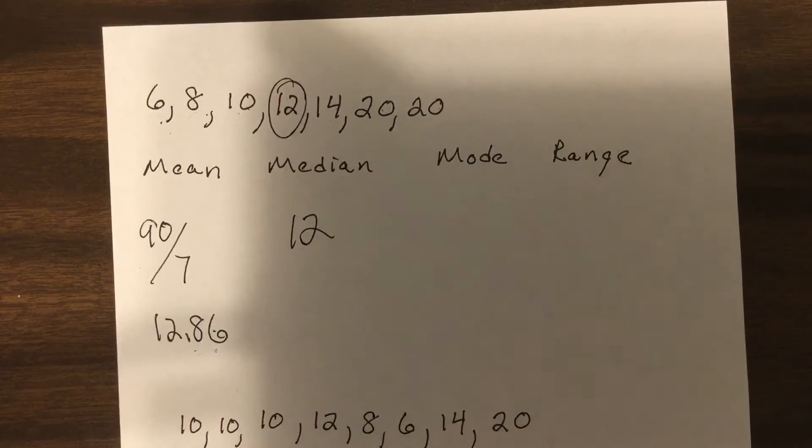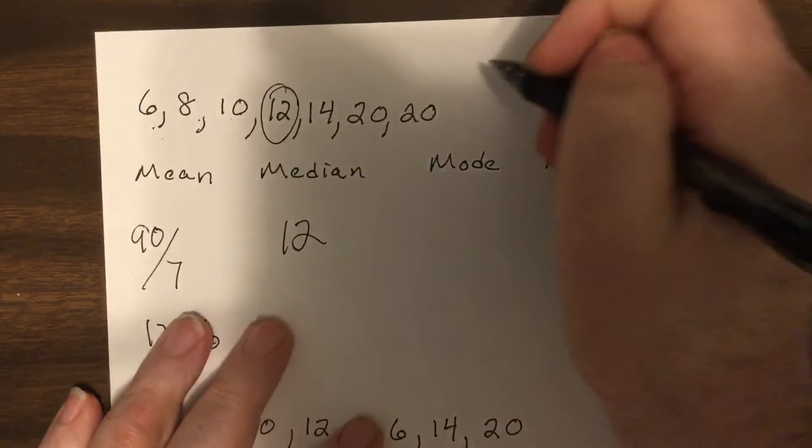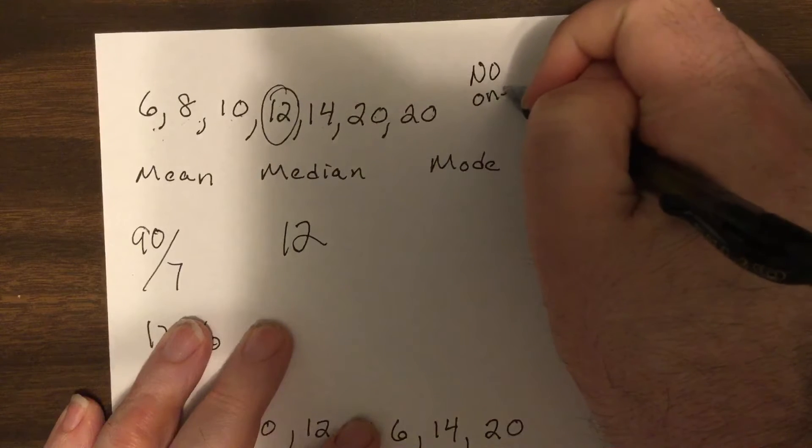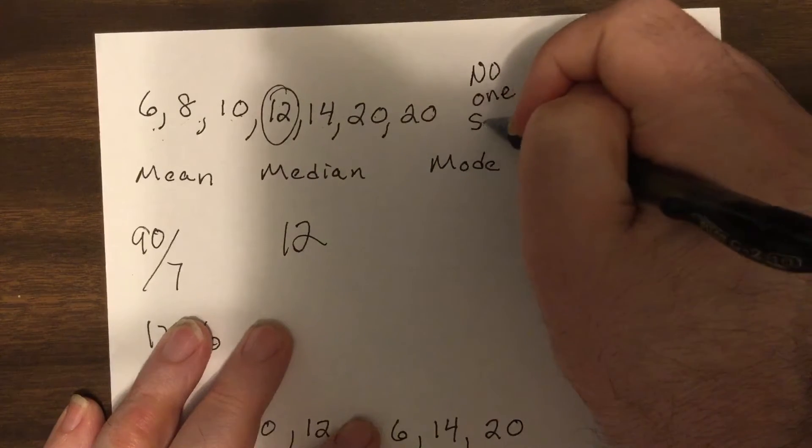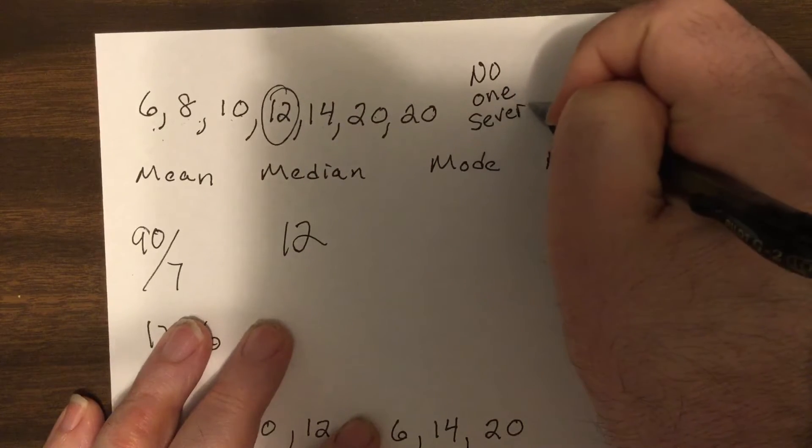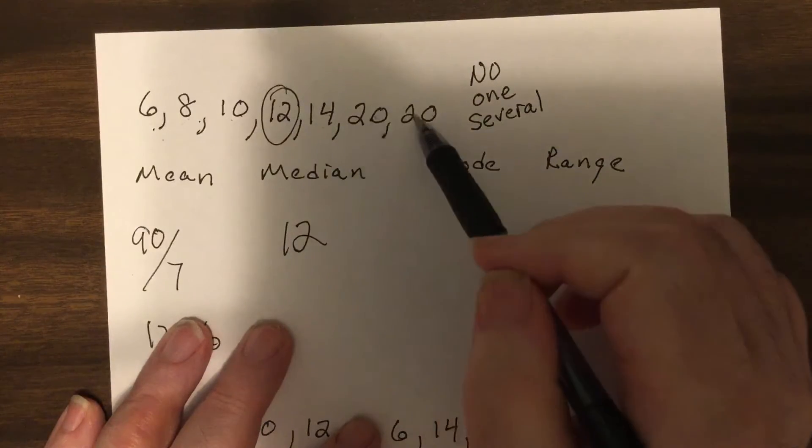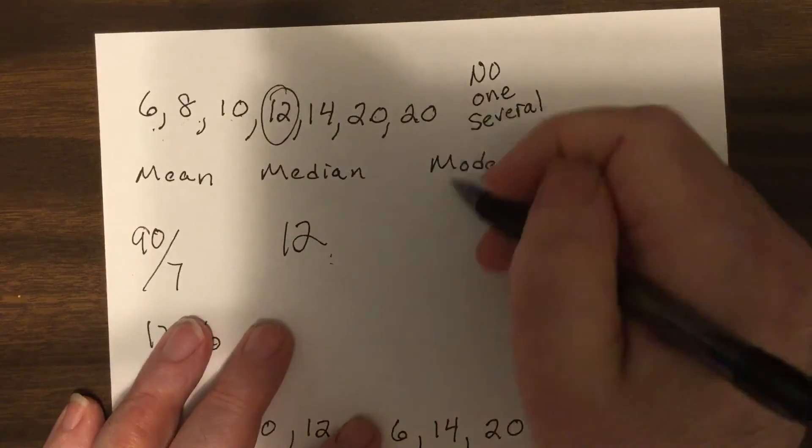Now the mode is the one that occurs the most. You could have no mode, you could have one mode, and you could have several modes. So in this case we only have one. 20 repeats more than the others, of course there aren't any others that repeat.